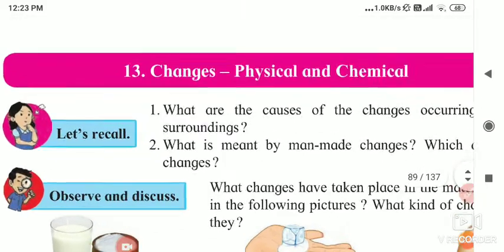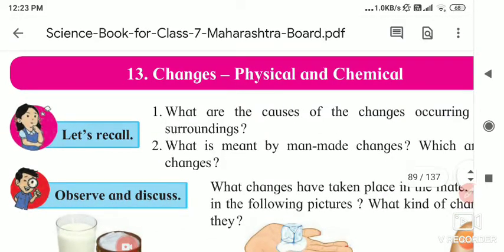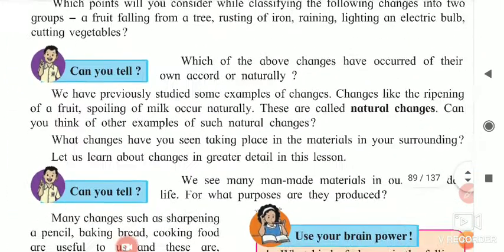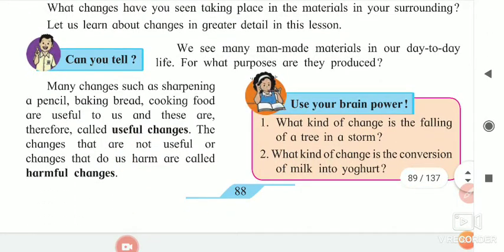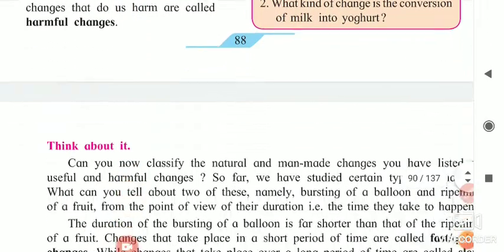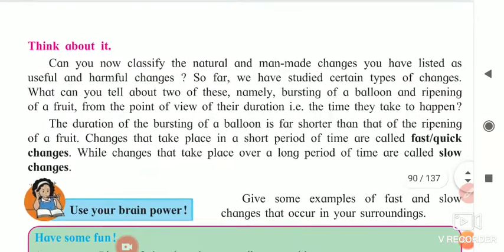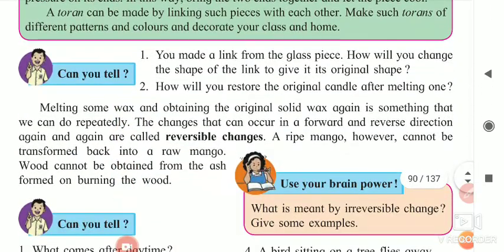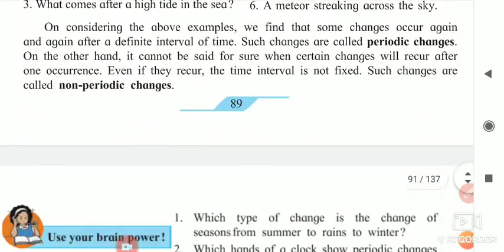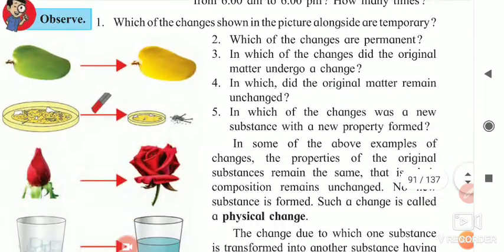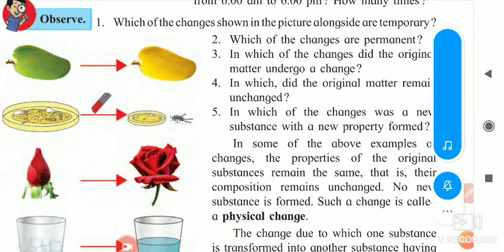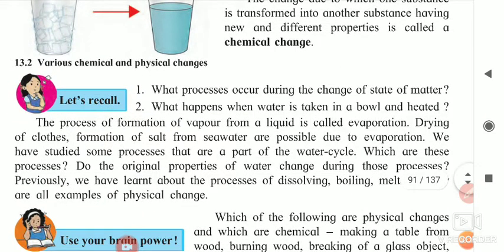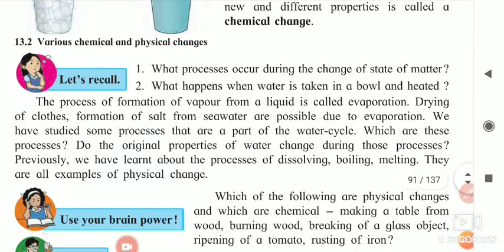Hello students. In this lesson we have seen the different types of changes: natural, artificial, manmade, useful change, harmful change, periodic change and non-periodic change, fast change, slow change, then reversible and irreversible change, and physical change and chemical change too. Now let us recall and we will see the next part of our lesson.